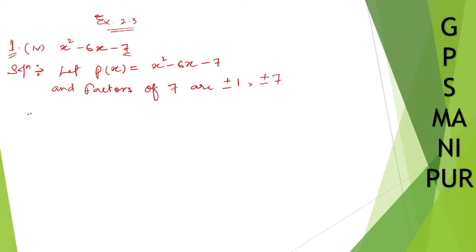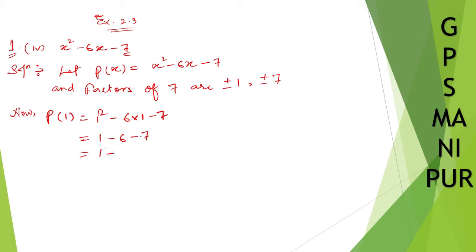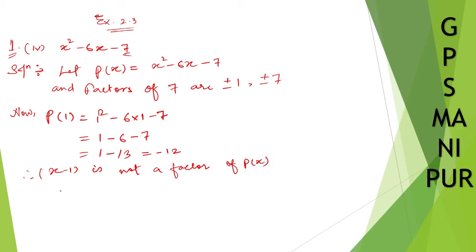Now, p(1) is equal to 1 squared minus 6 into 1 minus 7. So 1 minus 6 minus 7 gives us 1 minus 13, which is minus 12. So x minus 1 is not a factor of p(x).